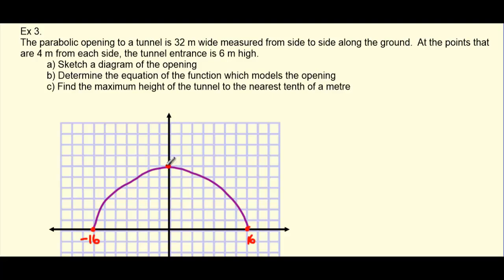Our vertex is going to be right up here in the middle, and we don't know what the height is yet, but we do know the x value of that vertex is going to be 0. So I'm going to write a 0 there, and I'm just going to write an h here to represent height.